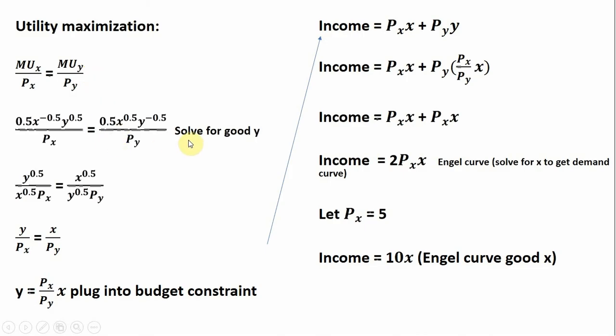To get the Engel curve for good X, we simplify this expression for good Y. First, cancel the 0.5 terms that appear on both sides. Next, bring X to the minus 0.5 down into the denominator, and do a similar thing for the Y term, bringing it down into the denominator.